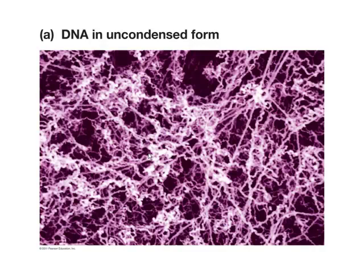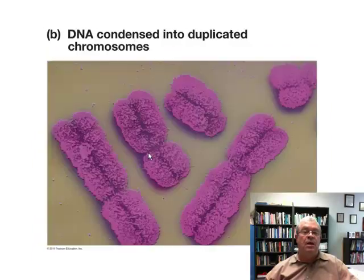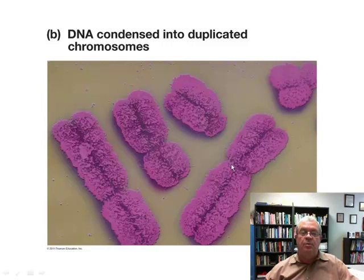Here's another picture of DNA in the uncondensed, unwound form. And here are some chromosomes — they're duplicated, as labeled. These are two sister chromatids joined at a centromere. That's it for this video.